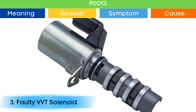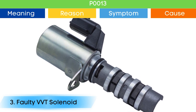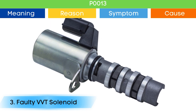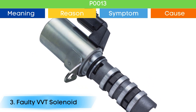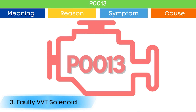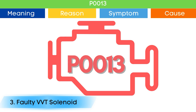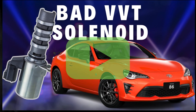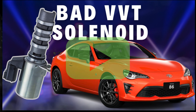Cause number three: bad VVT solenoid. Due to a bad VVT solenoid, the camshaft position advance and delay may not work properly, which may trigger P0013 and other OBD-II codes related to the VVT solenoid, along with symptoms of a bad VVT solenoid. Check our detailed video to learn more about the symptoms of a bad VVT solenoid and related OBD-II codes — link in the corner.